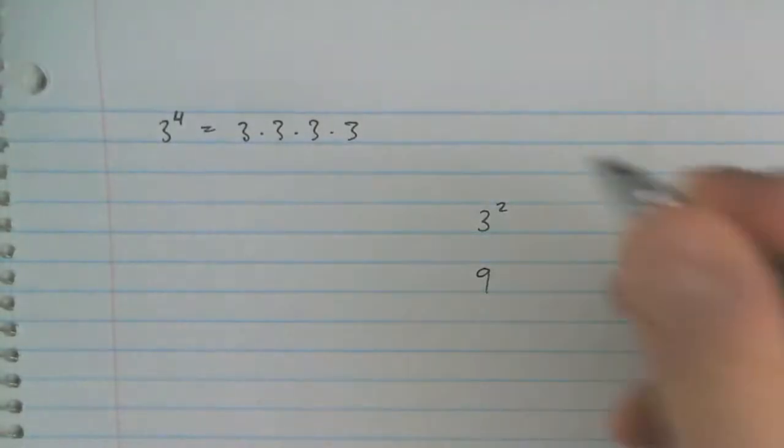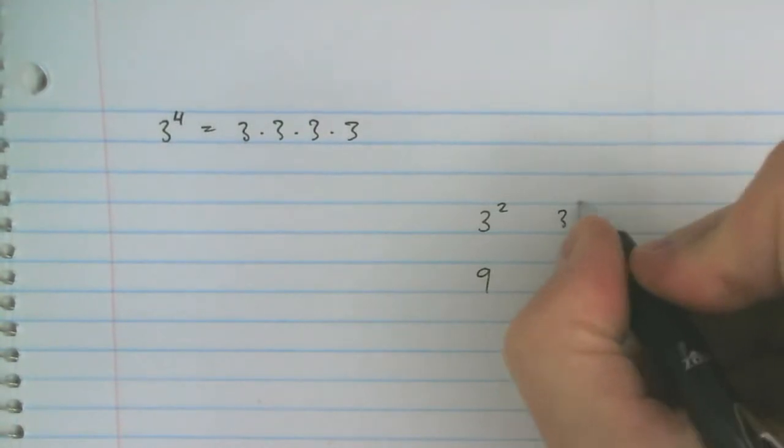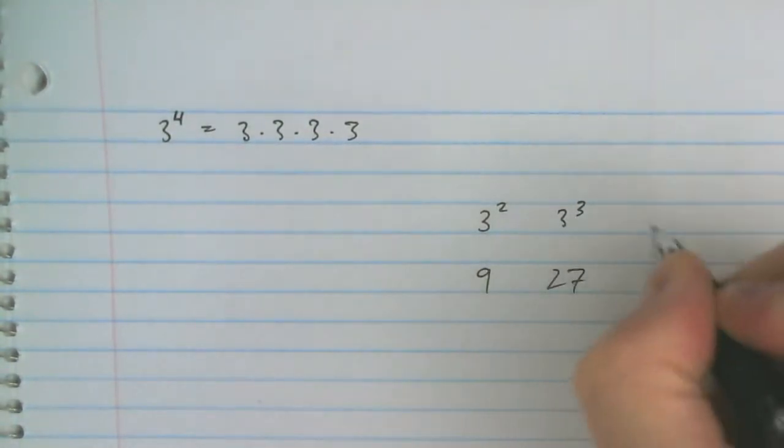That's 9. 3 to the power of 3 is 27. 3 to the power of 4 is 81.